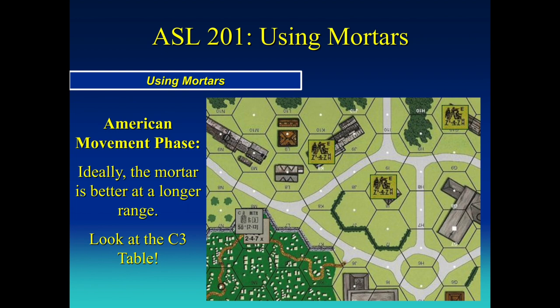We're looking at the scene - this is German defensive fire. For the most part, mortars are a little better at longer range, and we'll see what that means. We've got three full squads coming at us, and one lowly half-squad here with a mortar. I mentioned mortars are better at longer range - let's look at what that means by going to the to-hit table, the C3 table, found on your blue charts or the QDRC chart.